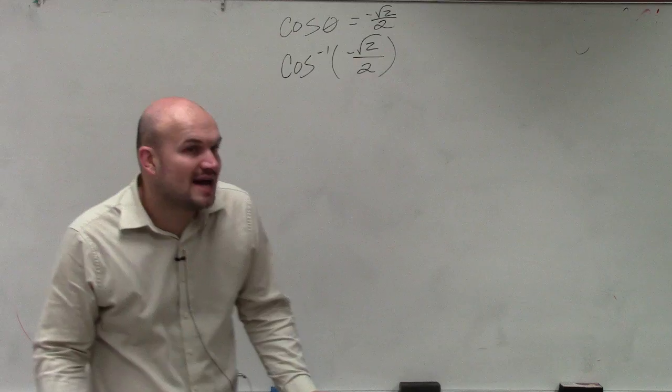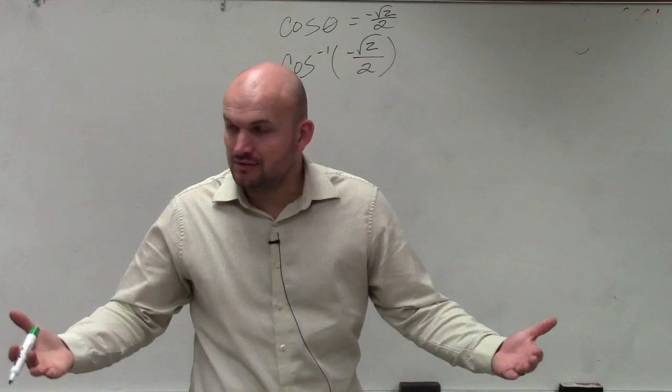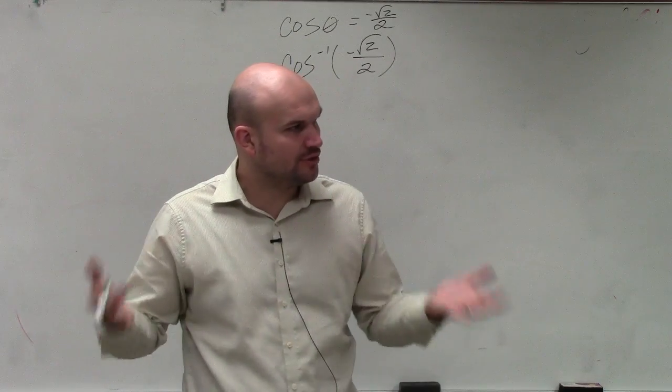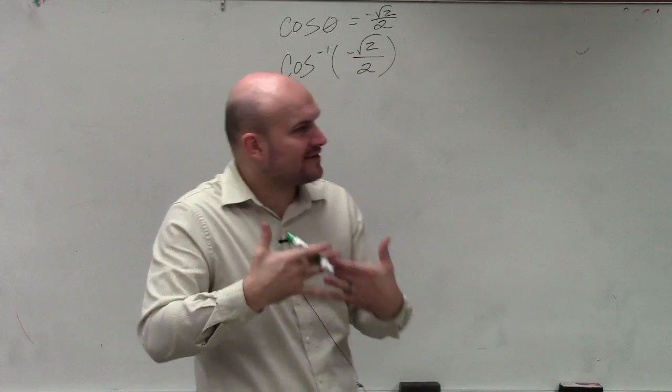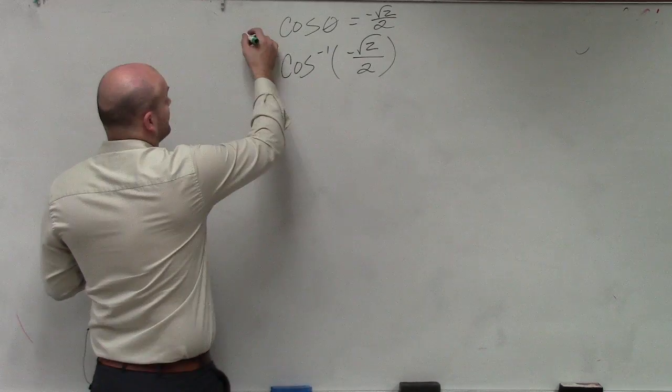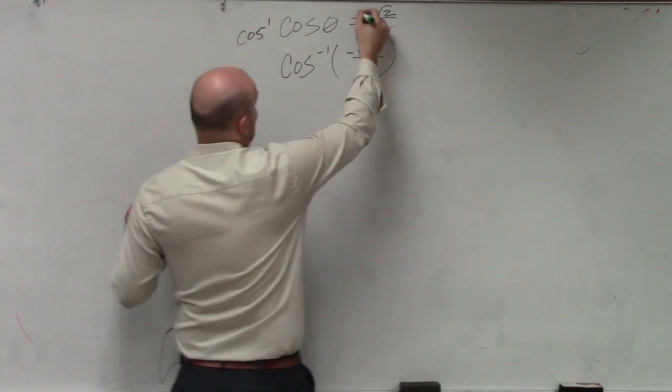The cosine of what angle is negative square root of 2 over 2? So to undo the cosine of an angle, we took the cosine inverse of both sides.